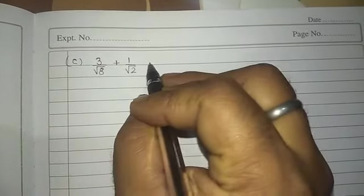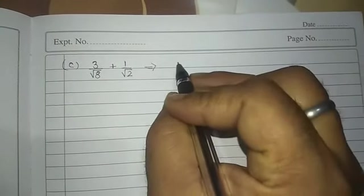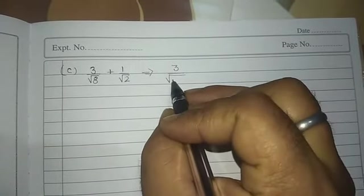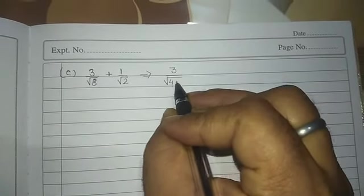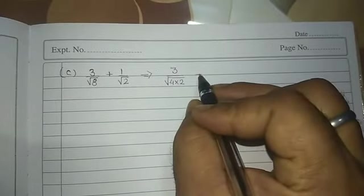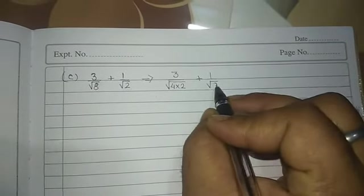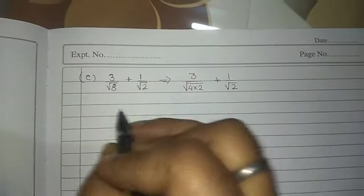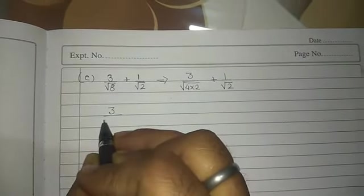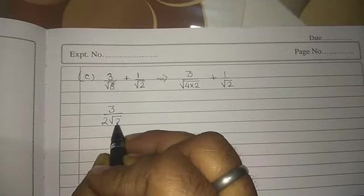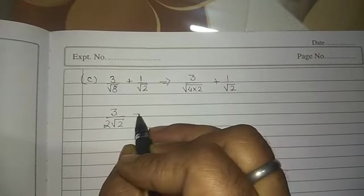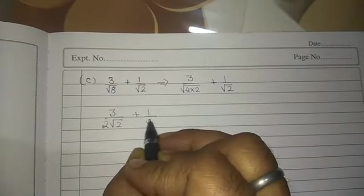First of all we have to make this part in factorization. 3 upon root of 4 times 2 is 1 upon root 2. Now after that, what we have to do, 4 is the square of 2, so it will become 3 upon 2 root 2, by root 4 will become 2, and root 2 is already there, plus 1 upon root 2.